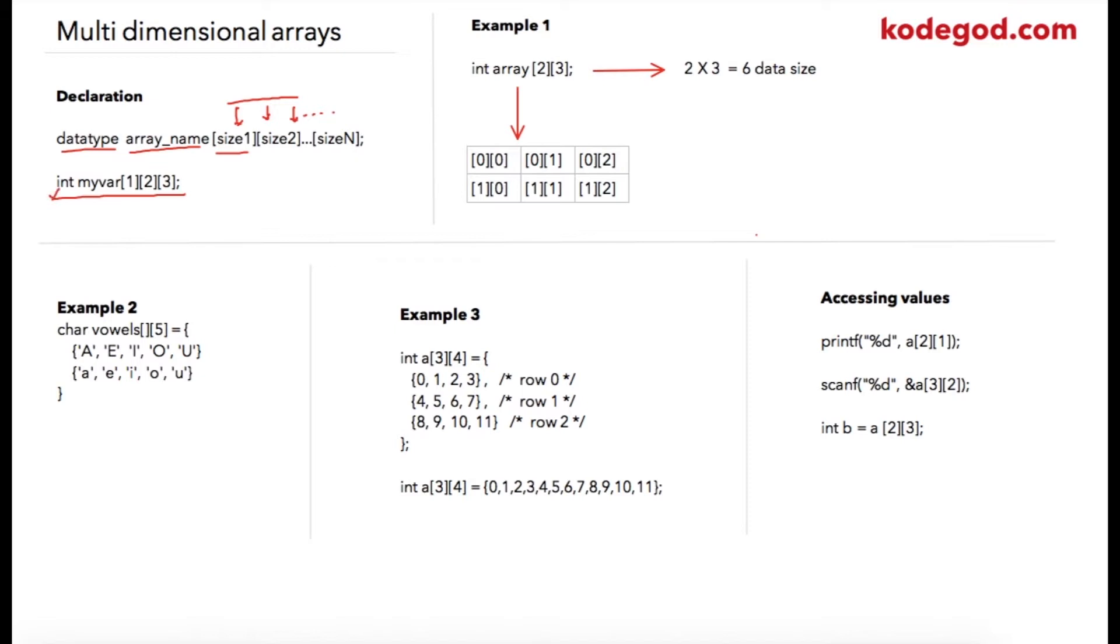In this example I have declared an array named myArr and it is of type integer. It is a three-dimensional array, so total number of variables that this array can store is 1 multiplied by 2 multiplied by 3, which will be 6. In this another example I have declared an integer array with dimension as 2 and 3, so total data size will be 2 multiplied by 3, that is 6.